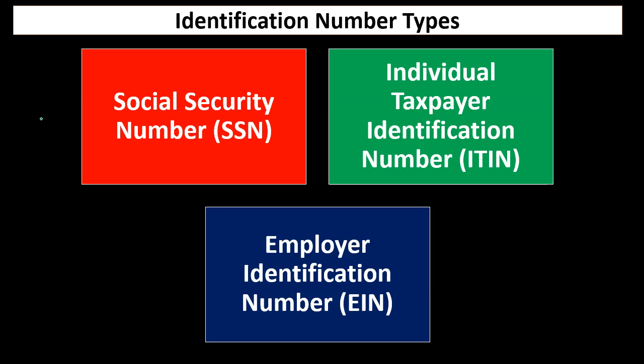Note that if you just start doing business and you start earning revenue, and you don't have any other employees, then you can report that information on your Schedule C with your Social Security number — your individual identification number. However, if you have employees, then you're required to get an EIN in order to report that information to the IRS related to the employees. That's why it's called the Employer Identification Number.